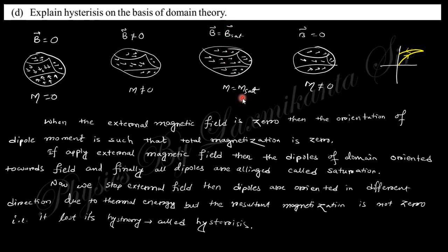Now, if you reduce the magnetic field and become zero, but the total magnetization is not equal to zero, there are retained some magnetization. This is called hysteresis because it's large hysteresis. If you find out the graph, nature of this graph will be like that.